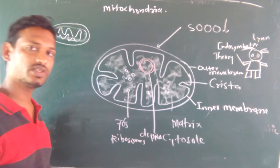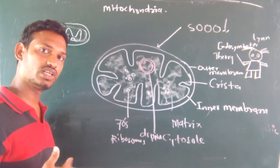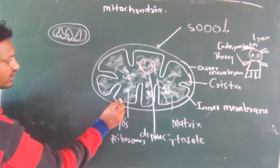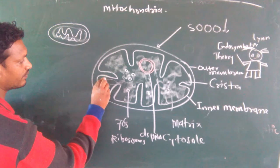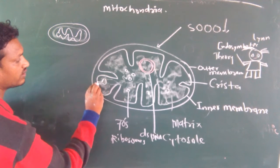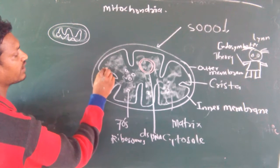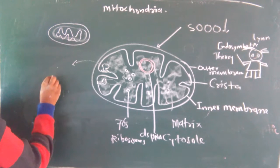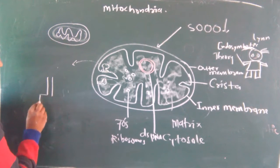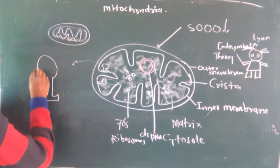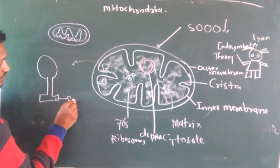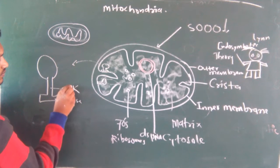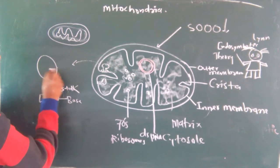In case of inner structure, we will elaborate the inner structure. The inner structure contains a specific particle known as F1 particles. These F1 particles contain base, stalk, and head.